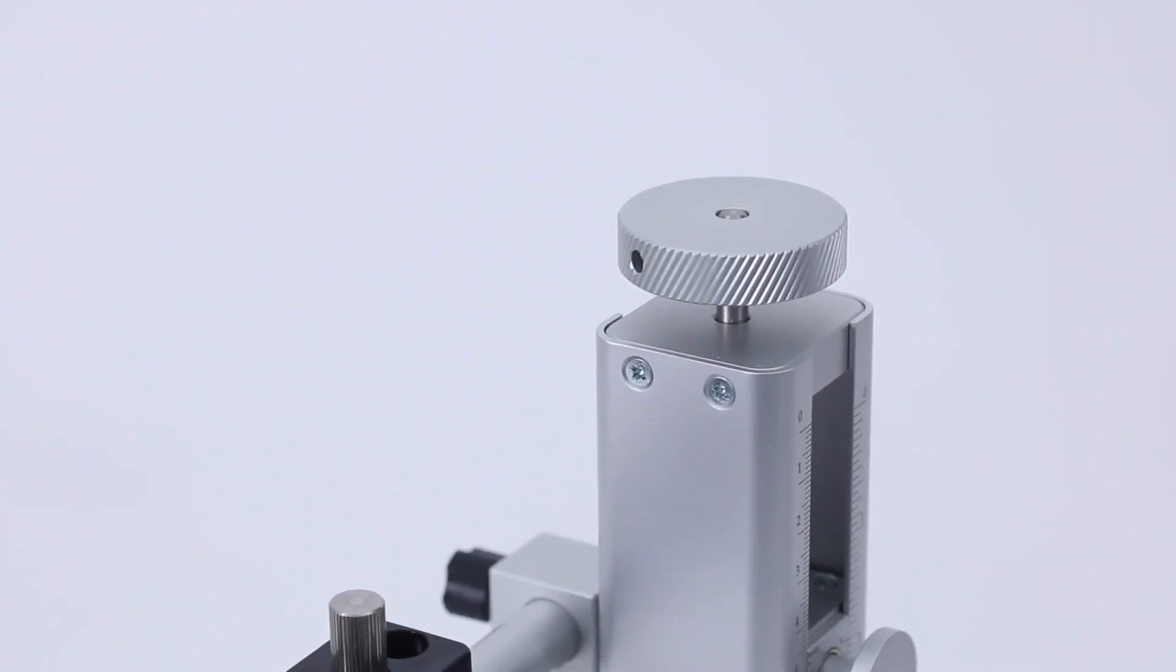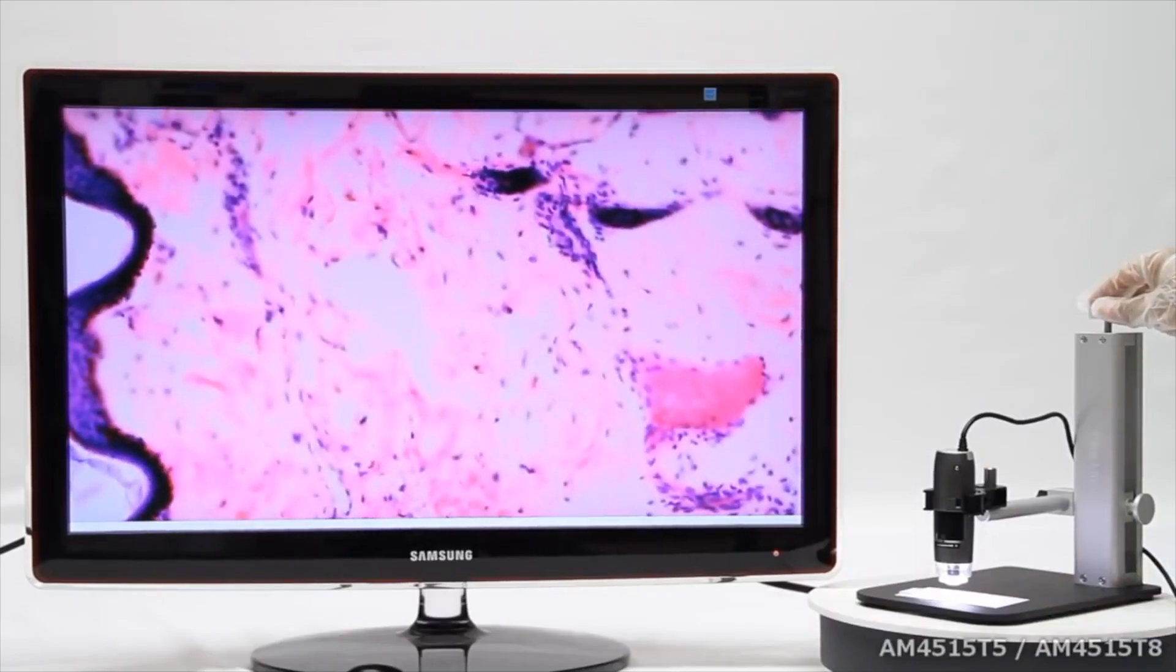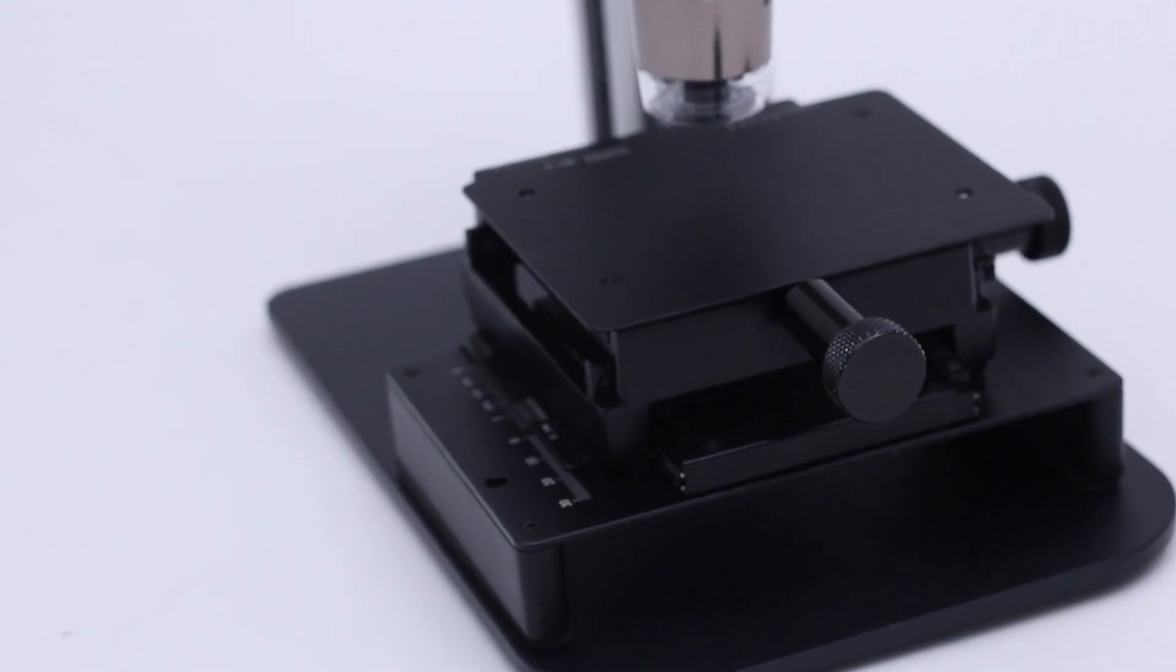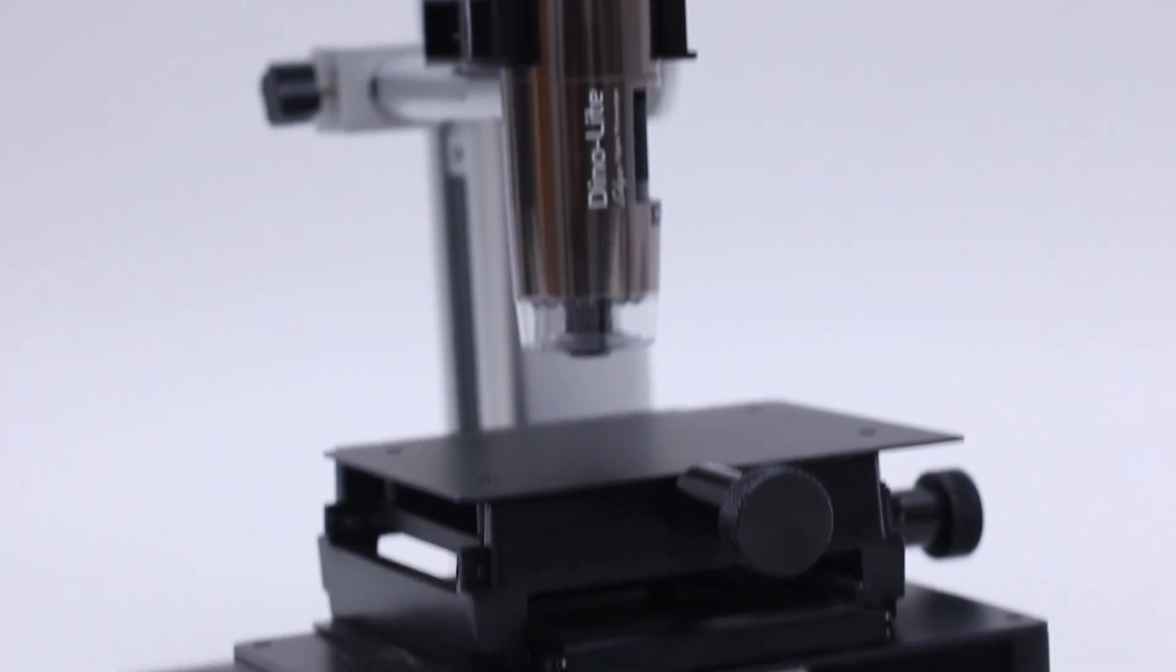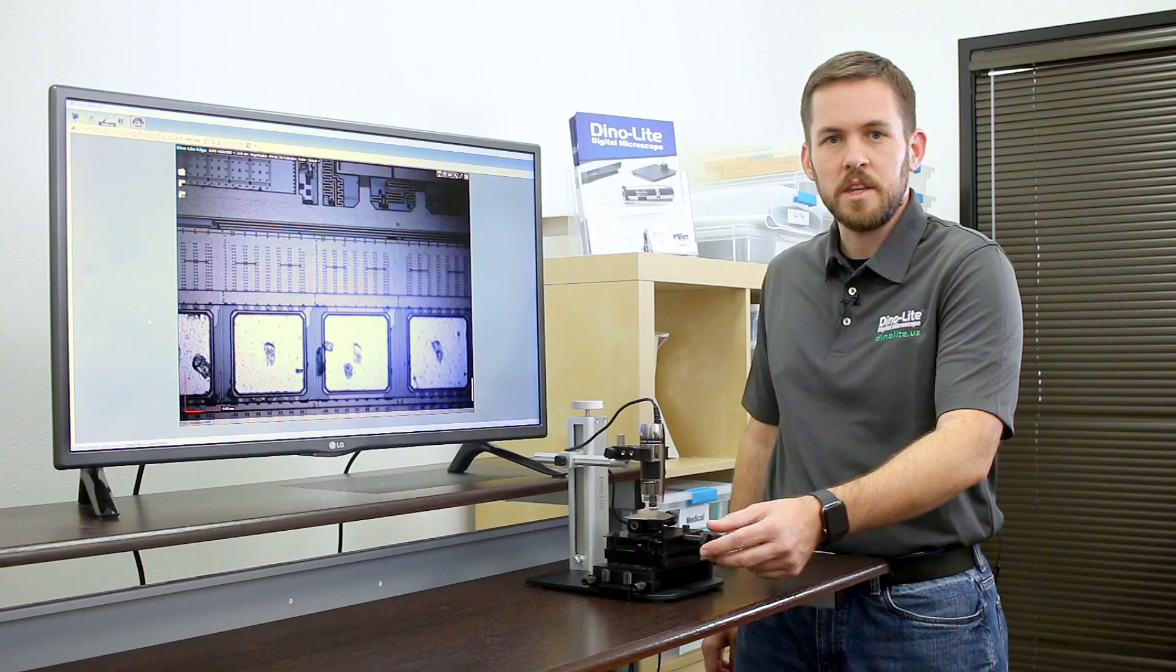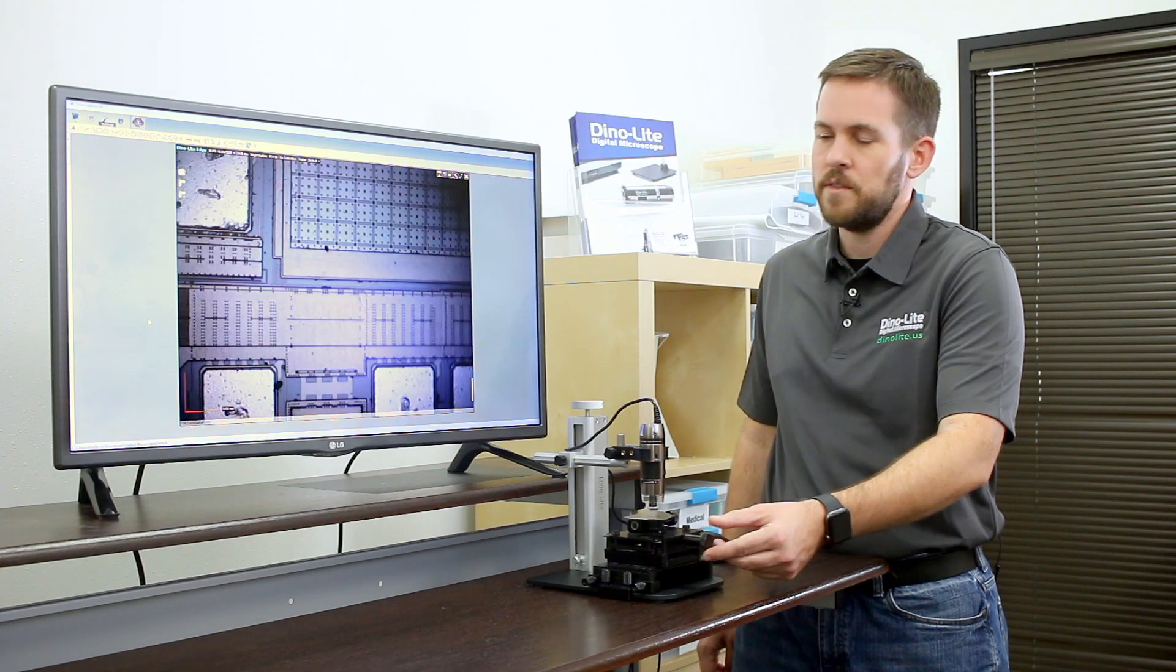The fine focus adjustment knob on the top allows you to easily bring the Dynolite into focus. Compatibility with positioning accessories such as this MS15X S2 allow you to bring the point of interest into focus easily.